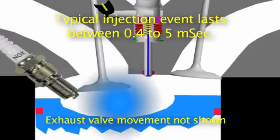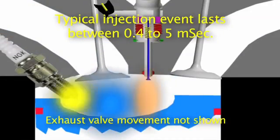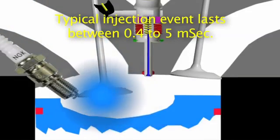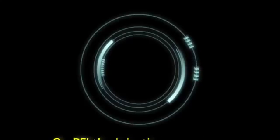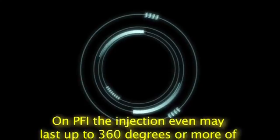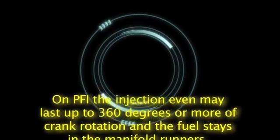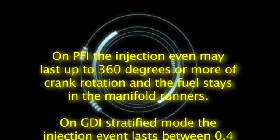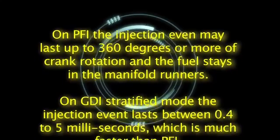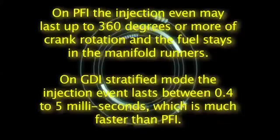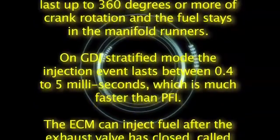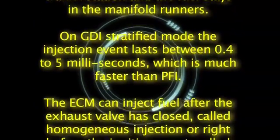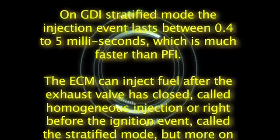Combined with multiple injection events, GDI can achieve combustion in less crankshaft rotational degrees than PFI. On PFI the injection event may last up to 360 degrees or more of crank rotation and the fuel stays in the manifold runners. On GDI stratified mode the injection event lasts between 0.4 to 5 milliseconds, which is much faster than PFI.